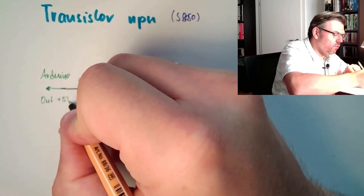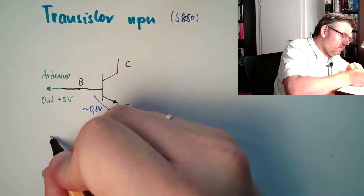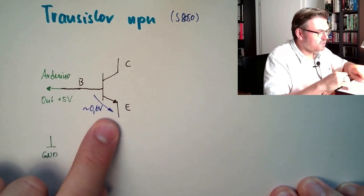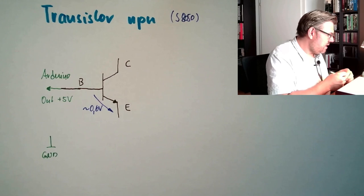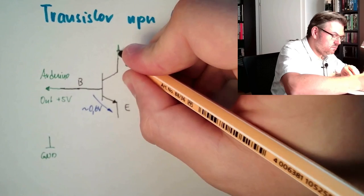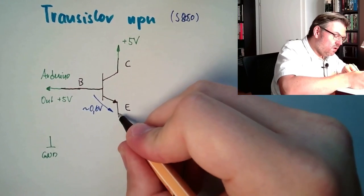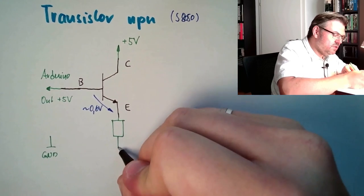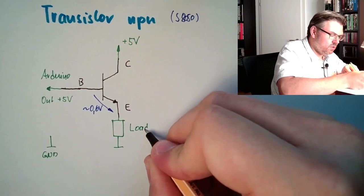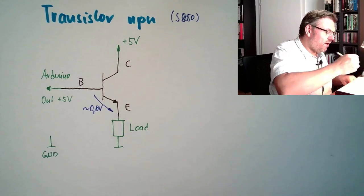So we have here plus 5 volt maximum. Here we have some of the ground, of course, of the Arduino. Here we also have 0.6 volts. And here we are also going to have a power supply, plus 5V. And here we are producing our load. This is the load. This is what we want to turn off and on. So here the rest. Here we have our 5V.